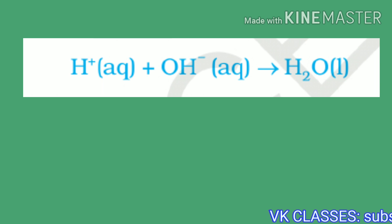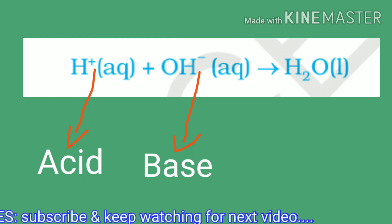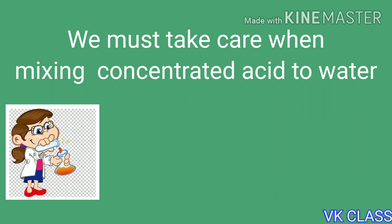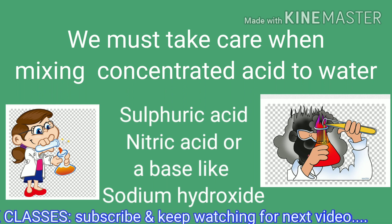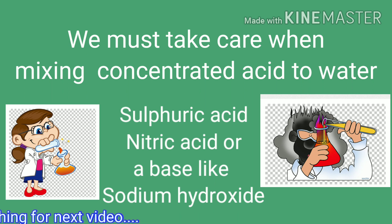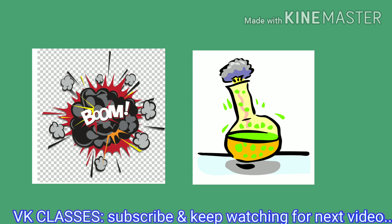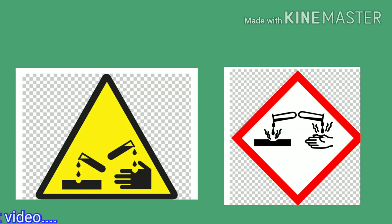We learn that H⁺ from acids and OH⁻ from bases form water. Now, what happens when water is mixed with an acid or a base? We must take care: mixing concentrated acids like sulfuric acid or nitric acid, or a base like sodium hydroxide, is highly exothermic. The heat generated may cause the mixture to splash and cause burns, or even break the container due to excessive local heat. Some acid and base bottles carry warning signs for this reason.